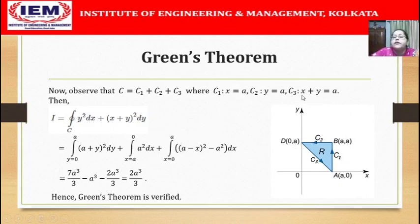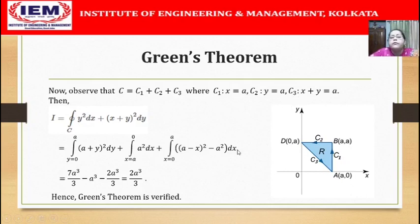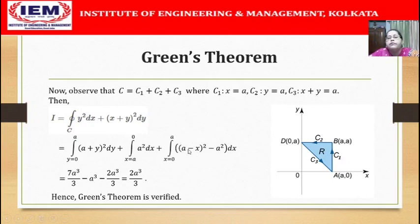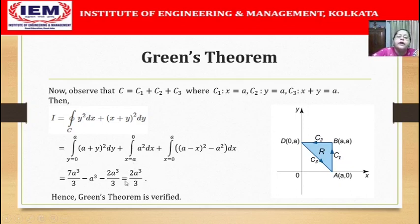For C3, the equation is x plus y equals a, so y equals a minus x, meaning y² becomes (a minus x)². We have dx plus (x plus y)² dy. Since x plus y equals a, that term becomes a². And since y equals a minus x, dy equals minus dx, giving a minus sign. Simplifying and integrating all three integrals, the answer comes out as 2a³/3.